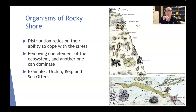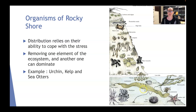Removing one element from the ecosystem means another one can dominate. If we recall the urchin, kelp, and sea otter situation — if we take the sea otters out of the mix, there's going to be too much urchin, and it's going to eat all the kelp. That's not a great thing.